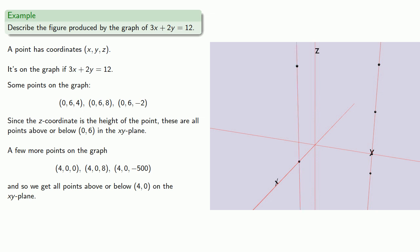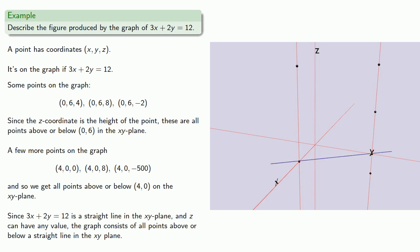And let's think about this a little bit more. Since 3x plus 2y equals 12 is a straight line in the xy plane, and z could have any value, the graph consists of all points above or below a straight line in the xy plane. So it might look something like this.